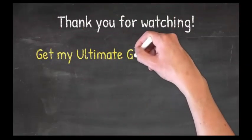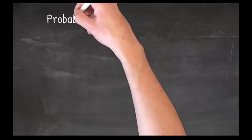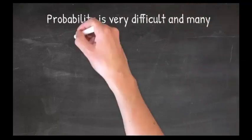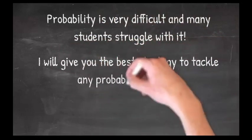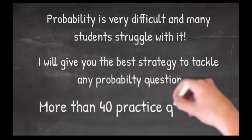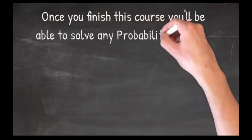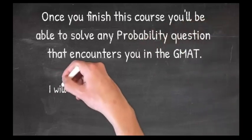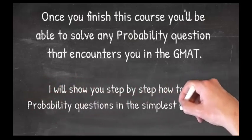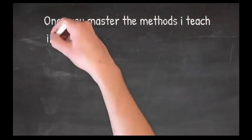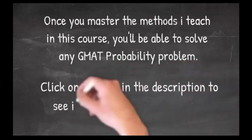In order to help you ace the GMAT, I decided to offer you for free my ultimate GMAT probability course. You can find this course in the description of this video. Probability is one of the most important parts of the GMAT quant section — it is very difficult and many students struggle with it. I will give you the best strategy to tackle any probability question and show you how to apply it to more than 40 different practice questions. Once you finish this course, you'll be able to solve any probability question on the GMAT. I will introduce combinations, arrangements, and permutations, then we'll solve together more than 40 GMAT questions of different difficulty levels, step by step in the simplest way possible. This will help you save a lot of time during the test — click the link in the description to get this unique free course.